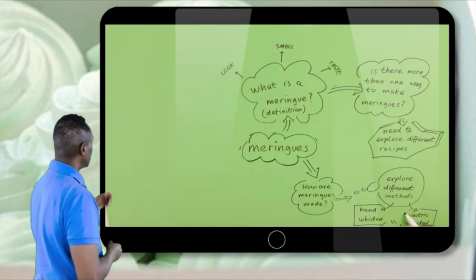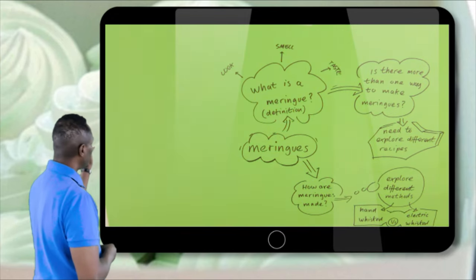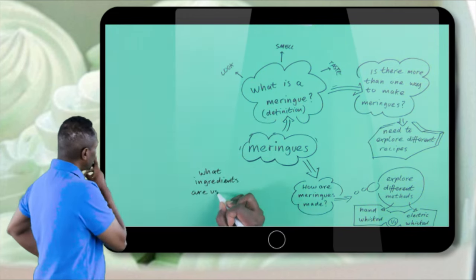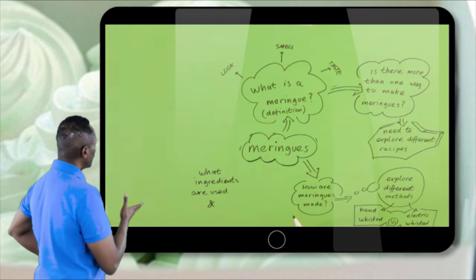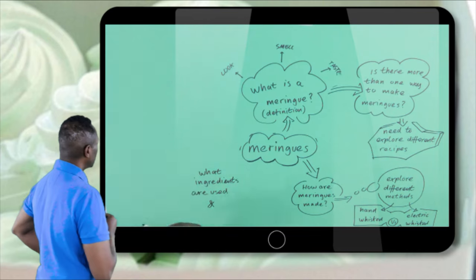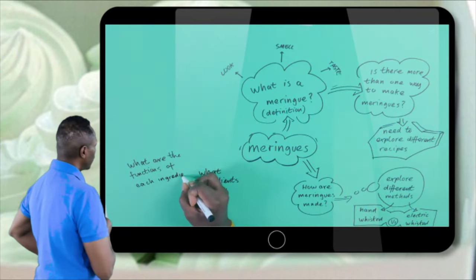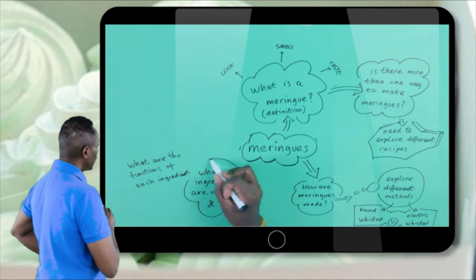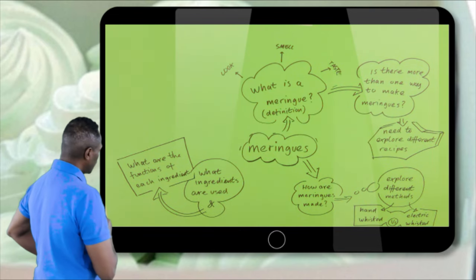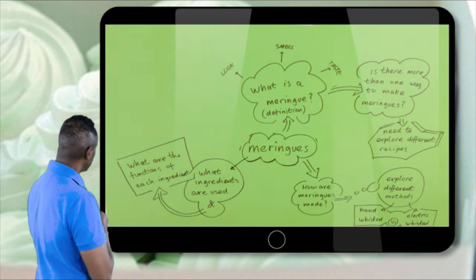I'm also going to look at what ingredients are used and what are the functions of each of those ingredients. So when I'm looking at the different recipes, I want to look at why are recipes different. In each recipe there will be a number of ingredients that are common to all, but you may find there are a few ingredients a little bit different. I want to know what are the differences and what are the differences for. Each one of the ingredients, what function do they provide this particular dish?